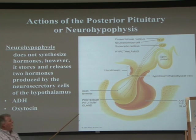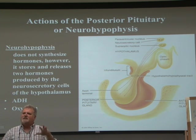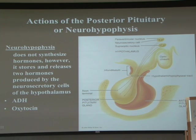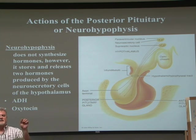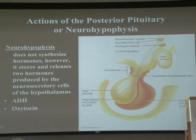Two hormones released from the posterior pituitary are ADH and oxytocin. ADH is anti-diuretic hormone — it makes you pee less, concentrating urine. It's the hormone of dehydration. At one time, we thought there was only one posterior pituitary hormone with different receptors, but research revealed it's actually two structurally similar but distinct protein molecules: ADH and oxytocin. Oxytocin causes the delivery process in pregnant women and milk letdown.